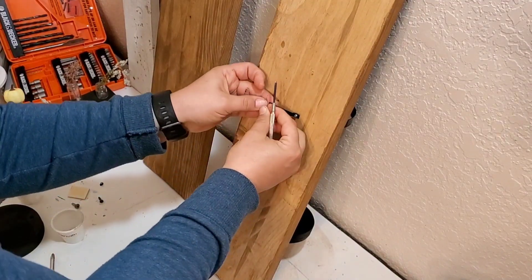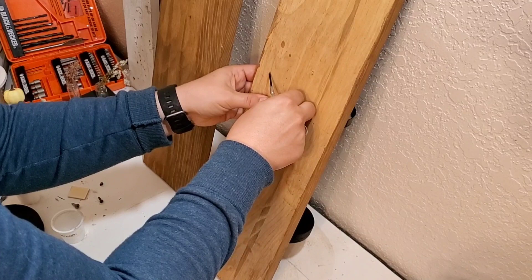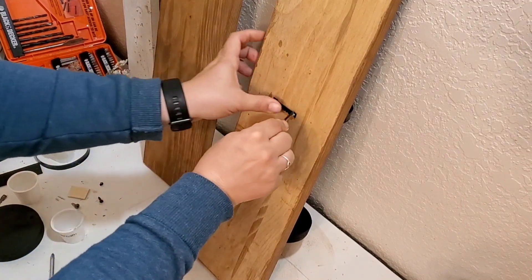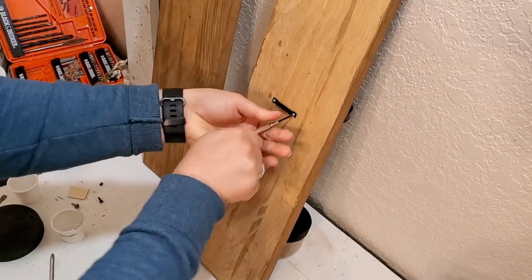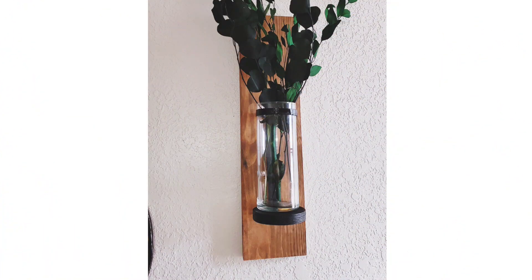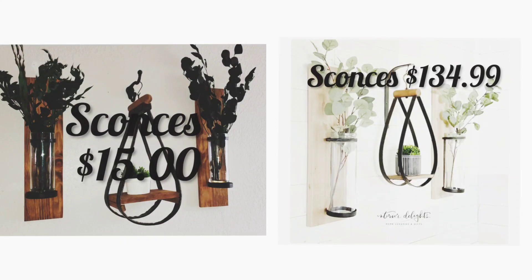Now look at that. My wall sconces are $15. Their wall sconce is $134.99. Now that's $120 savings on just the wall sconces. And I had the wood at home. And then most of the other items were purchased from the Dollar Tree. Thank you so much for watching. I enjoyed making this. If you like it, please give it a thumbs up. You like what you see, I invite you to subscribe. And until the next time, have a good one.